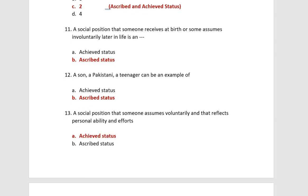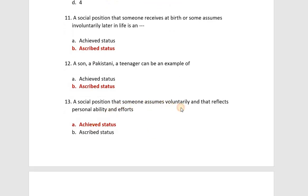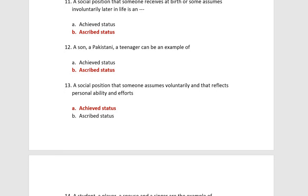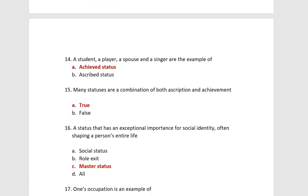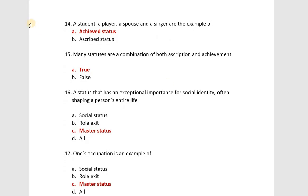Achieved status is a social position that someone assumes voluntarily and reflects personal ability and effort. It is the status which you achieve through your work. Examples of achieved status are: a student, a player, a spouse, and a singer.